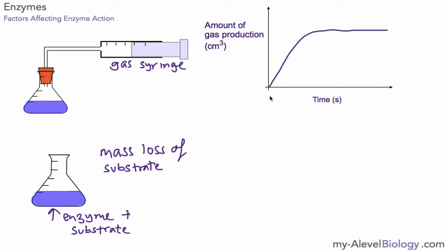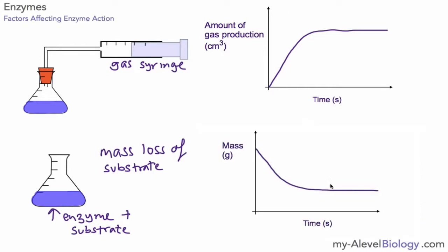If we're measuring the amount of gas production, you can imagine we'd get a graph that looks something like this: as time goes on, more and more gas is produced until all the substrate runs out and no more gas is produced — you've reached the maximum. For mass loss, the graph might look like this: the mass goes down as the reaction proceeds and then flattens out at a certain point.